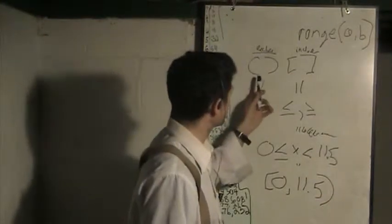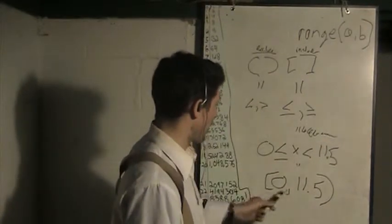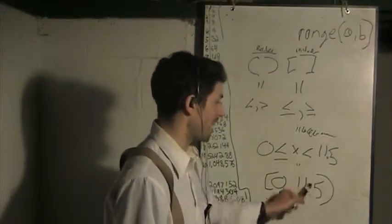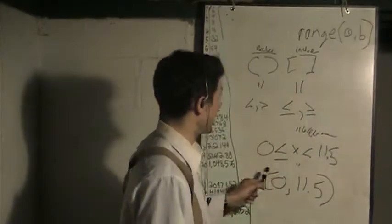So it's kind of a weird mnemonic, but if you think of rounded brackets, you can remember that being exclusive. So this is not including 11.5, but everything up until 11.5, and then the normal brackets being inclusive.